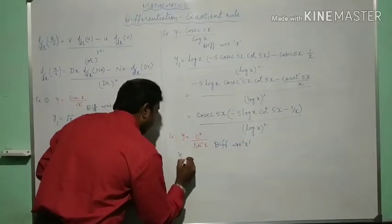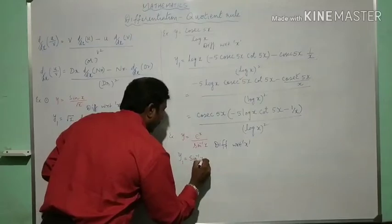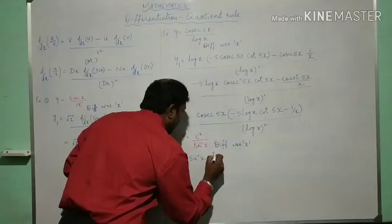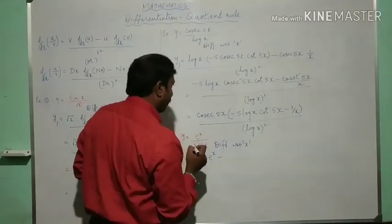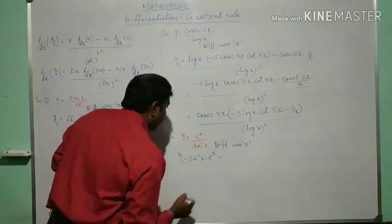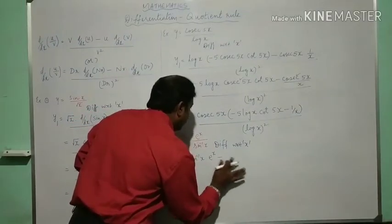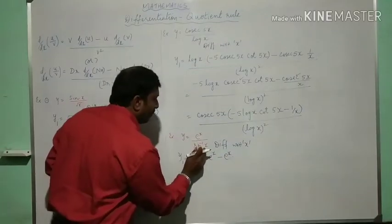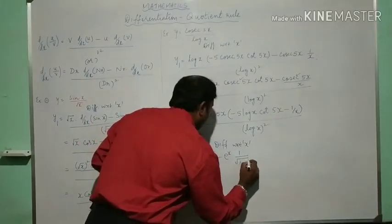Now y prime is equal to—first you should take denominator, derivative of e power x is e power x, minus e power x numerator into derivative of sin inverse x is 1 by root of 1 minus x square, whole divided by sin inverse x whole square.